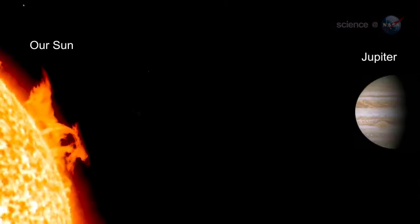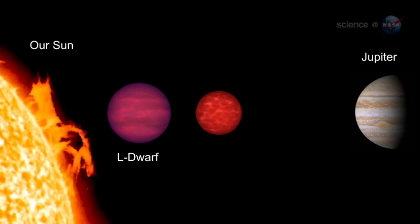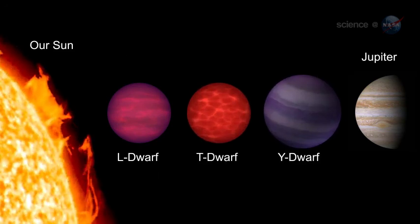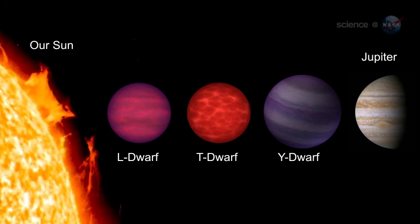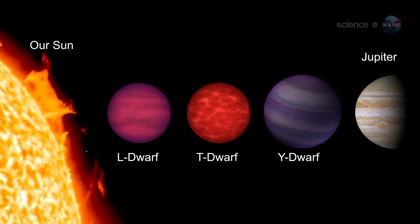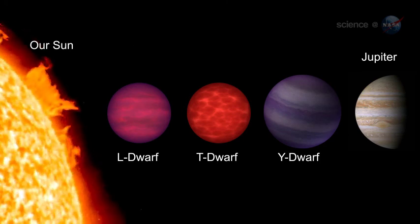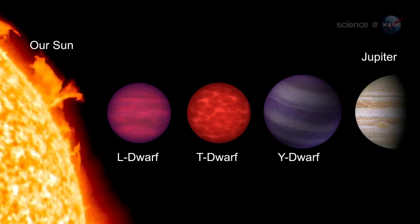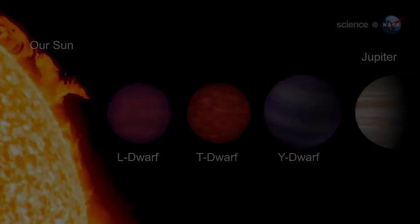How can a star be so cool? The Y-dwarfs are the chilliest members of the brown dwarf family. Brown dwarfs are sometimes referred to as failed stars. They are more massive than planets, yet not quite massive enough to fuse atoms in their cores. Brown dwarfs do not burn with the inner nuclear fires that keep stars like our sun shining steadily for billions of years.